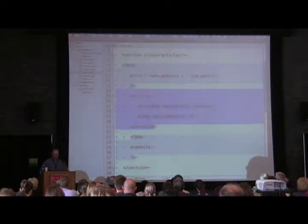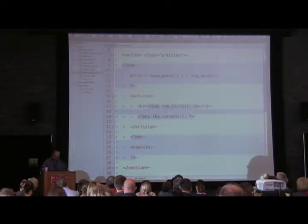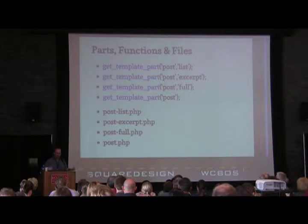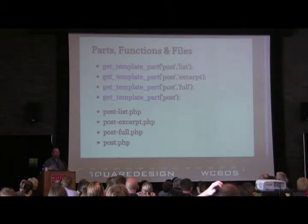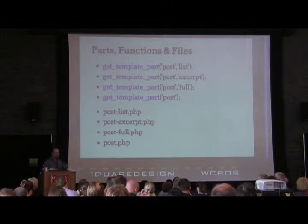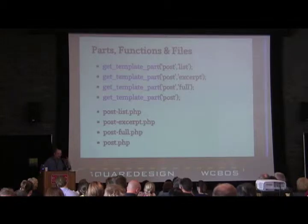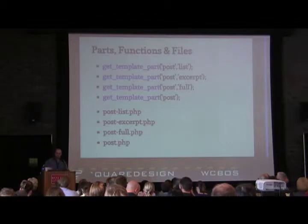Right now we have an article outputting titles in H2 and the full article content. That's fine if you want to show the full content everywhere with H2 headings everywhere — but that's probably not ideal. On the homepage you want to structure headings differently than on an archive page. When displaying a single post by itself, you want H1 for the title instead of H2 or H3. get_template_part lets us create blocks of code that format the post depending on where it is on the site.